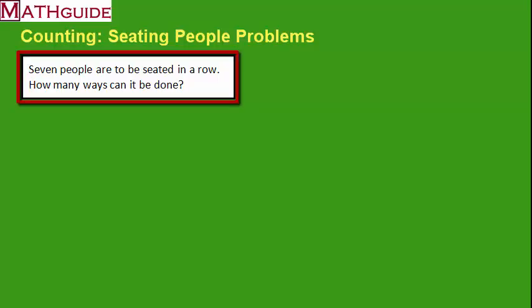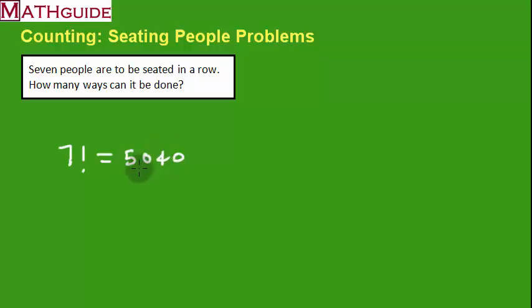Here's our new problem. Let's say we have seven people, and we're going to be seating them in a row. How many ways can we do it? Let's see, seven people, seven factorial. So, I'm going to plug this into a calculator. So, there's 5,040 ways to do it.